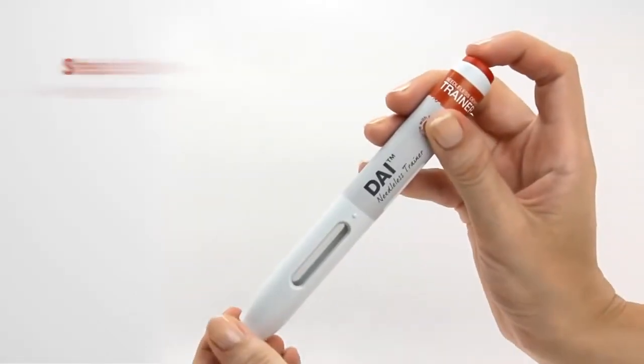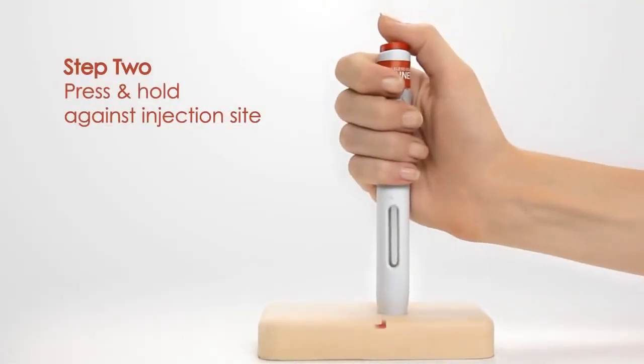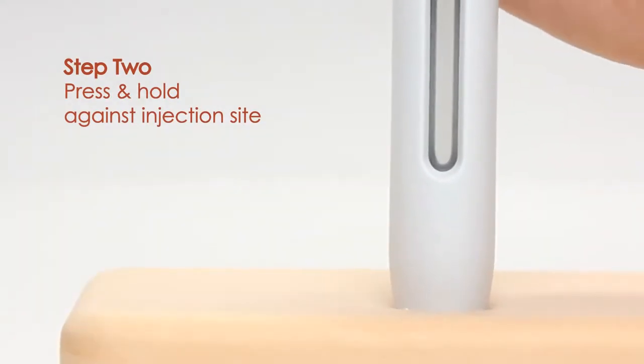Step 1: Remove the cap. Step 2: Press and hold the device against the injection site at a 90-degree angle. The needle cover is pushed into the device, releasing the safety lock and enabling the injector to be activated.